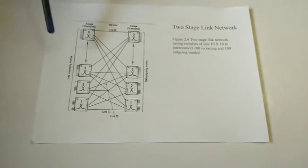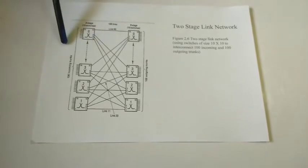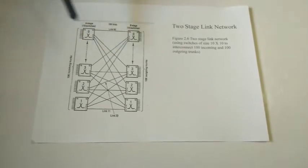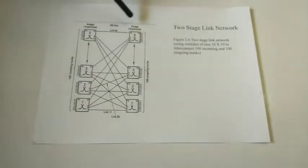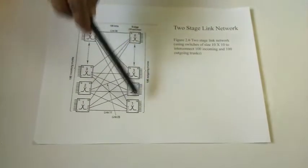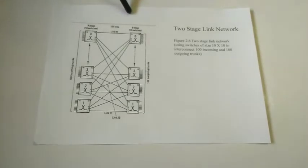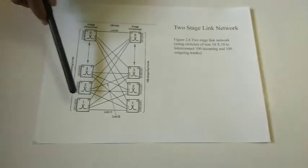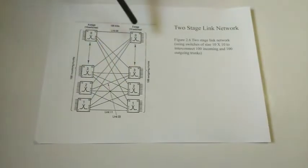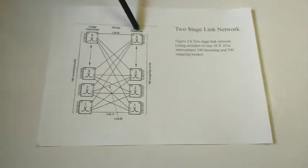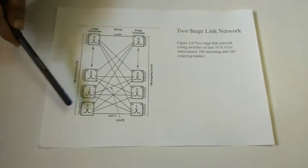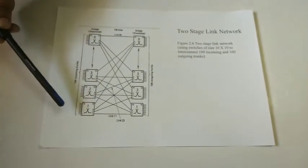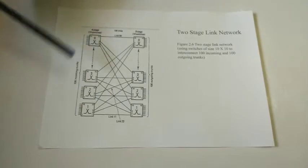Suppose we need to connect 100 incoming trunks to 100 outgoing trunks. We need a minimum of 10 switches on the primary side and another 10 switches on the secondary side. How to connect from one switch to another switch is shown in the diagram. In the crossbar switching system, numbers go from 1 to 0, meaning 1, 2, 3, 4, 5, 6, 7, 8, 9, and 10 is replaced with 0.